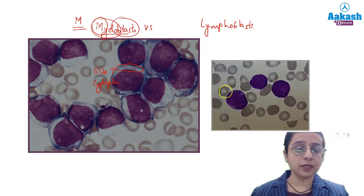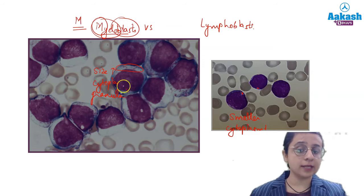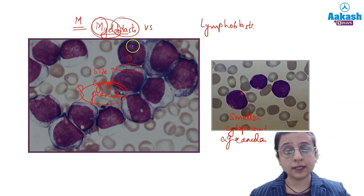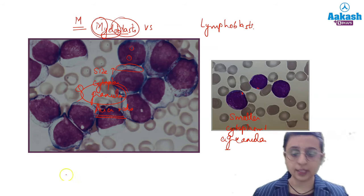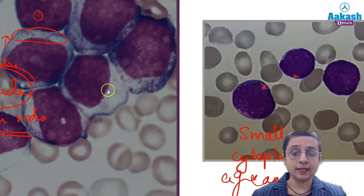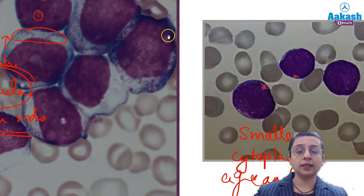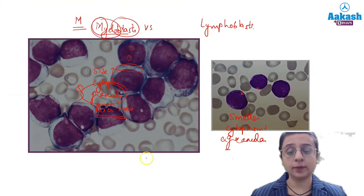Comparing to lymphoblasts: lymphoblast size is smaller, cytoplasm is less — there is only a very thin rim of cytoplasm. Granules are more in myeloblasts — granular cytoplasm is very important. Granules are a definitive sign of myeloid lineage. To summarize: myeloblasts have greater size, more abundant cytoplasm, abundant granules, Auer rods which are a definitive sign of myeloid lineage, and a prominent nucleolus. Lymphoblasts have smaller size, less cytoplasm, inconspicuous nucleolus, and comparatively coarser chromatin.